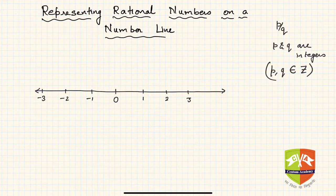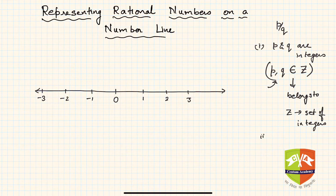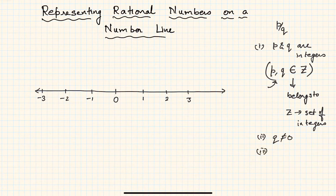This notation means p and q belong to Z, that means the set of integers. Criteria number one: p and q are integers. Criteria number two: q is not equal to zero — the denominator cannot be zero. And criteria number three: the GCD of p and q, that means the HCF of p and q, should be one.